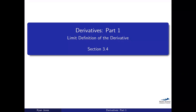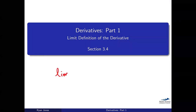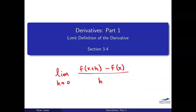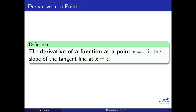We kind of saw this last time — this idea of the limit as h approaches zero of f of x plus h minus f of x, all over h. We saw that that gave us the slope of the tangent line at a particular point. We used c in here for that point, but you could just generally say x. So if I want the slope of the tangent line at a point x, this is the formula that I use, and that's what we call the derivative — the slope of the tangent line. That's our definition, just to recap.